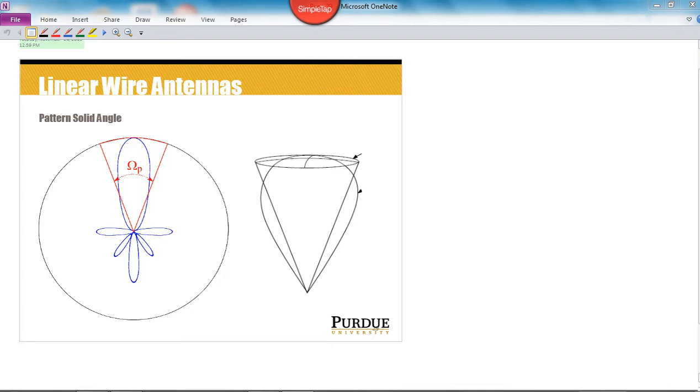Before we begin that analysis though, I want to introduce a new concept to you that's often used when we characterize antennas. And this is called the concept of the pattern solid angle, often called the beam solid angle. And this beam solid angle is an angle formed across an antenna pattern in which the radiation is constant and it's equal to the maximum value of the radiation.